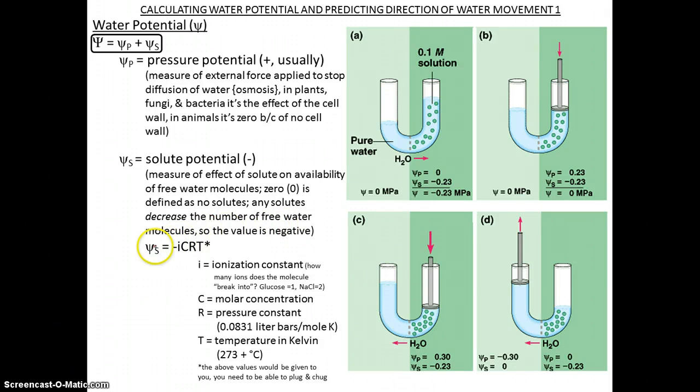To figure out the solute potential, you would use this formula. It's negative. I equals ionization constant, meaning if you place a molecule compound in water and it dissociates, then it dissociates into a number of molecules. For example, glucose is one—it does not dissociate in water. But sodium chloride will dissociate into sodium ions and chlorine ions, so its ionization would be two.